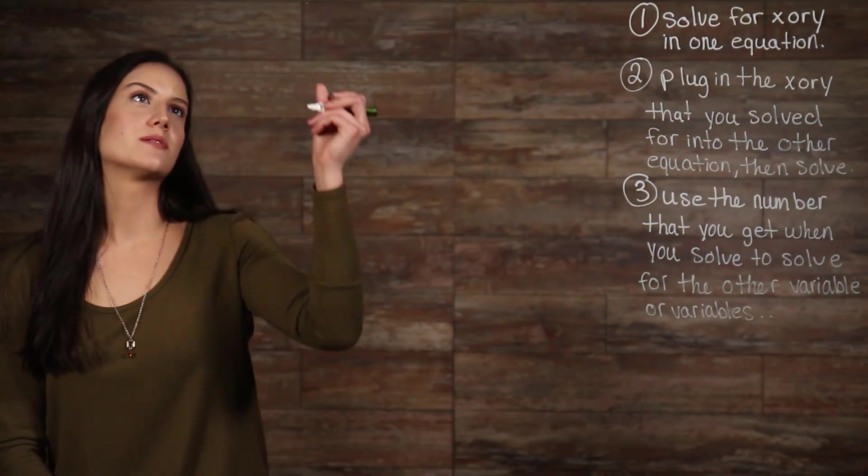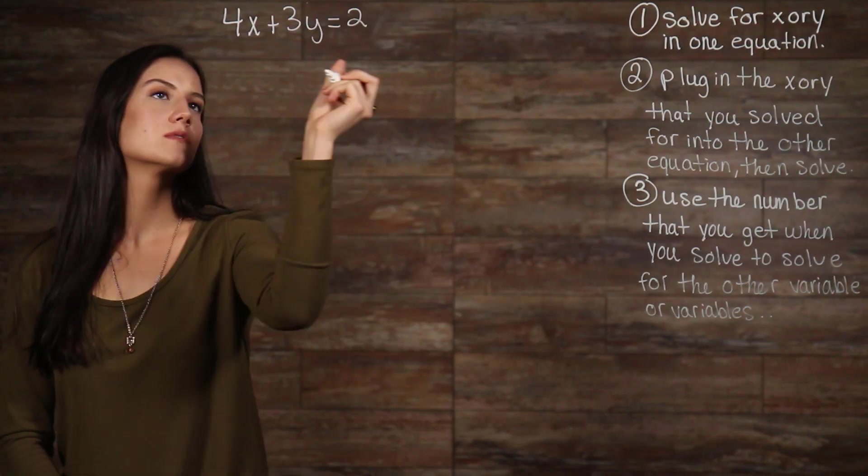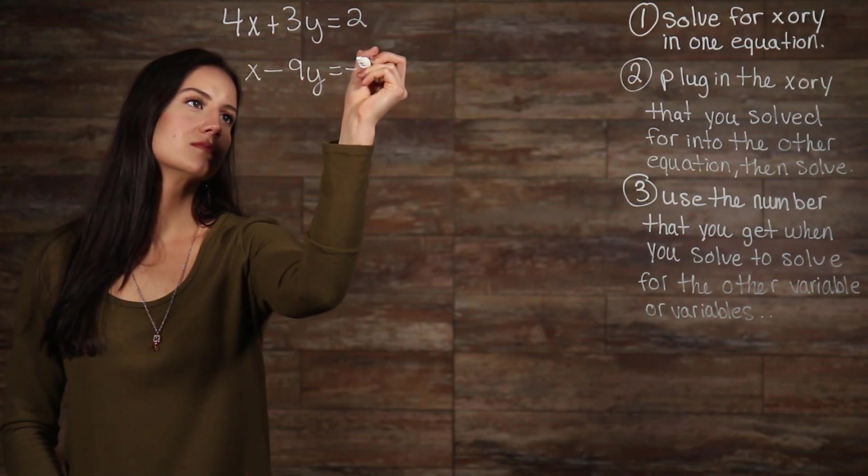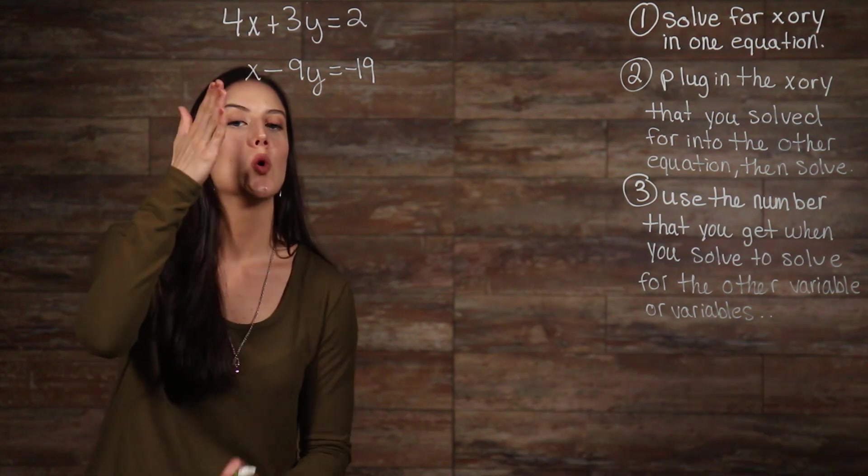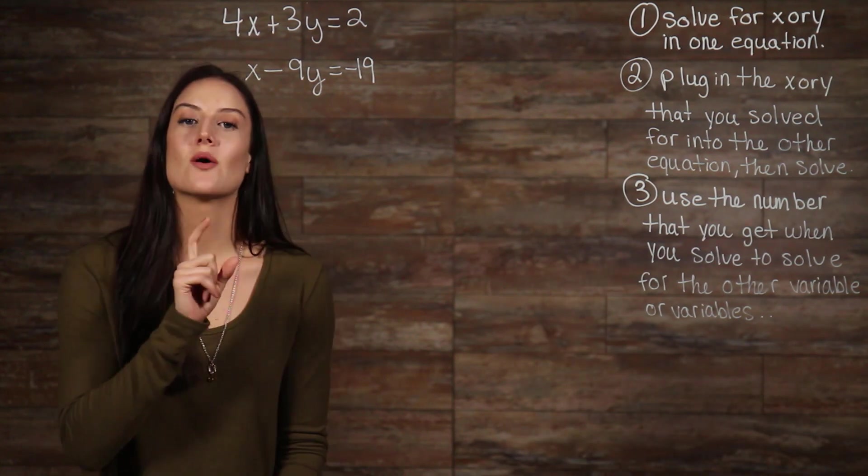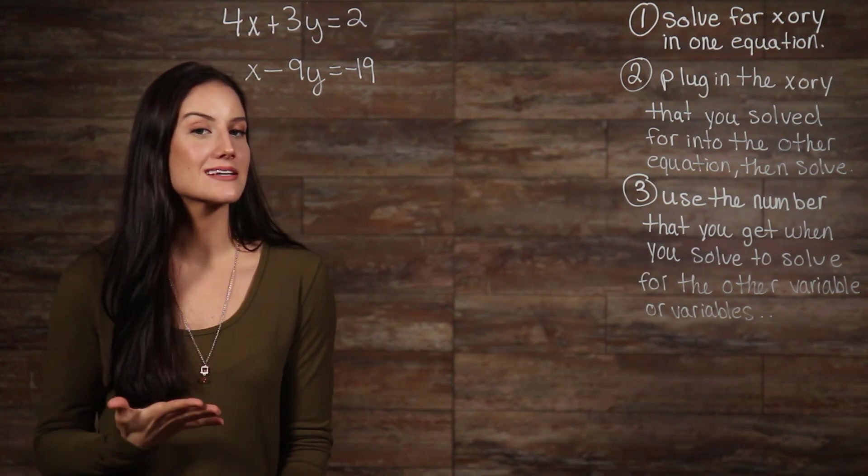So, let's get started. In this example, we can see that our second equation has a variable with one as a coefficient. So, that lets us know to solve for x.